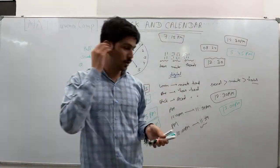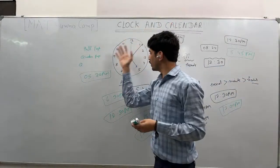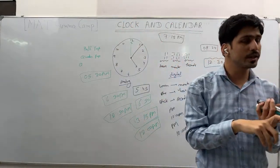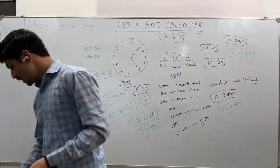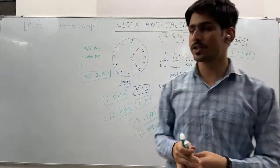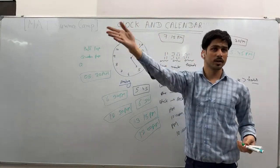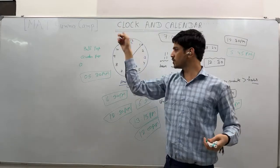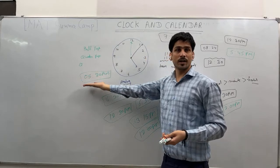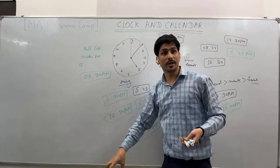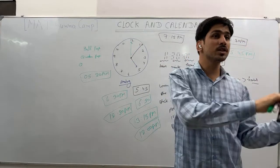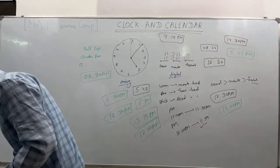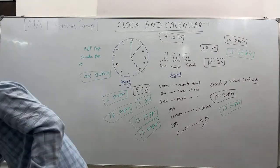Now let's move to mirror image and water image. If I place a clock showing 5 in front of a mirror, the mirror will show a different time — 7 o'clock. But if I observe the same clock in water, will the image be the same or different from the mirror image? The answer is: they will be different.